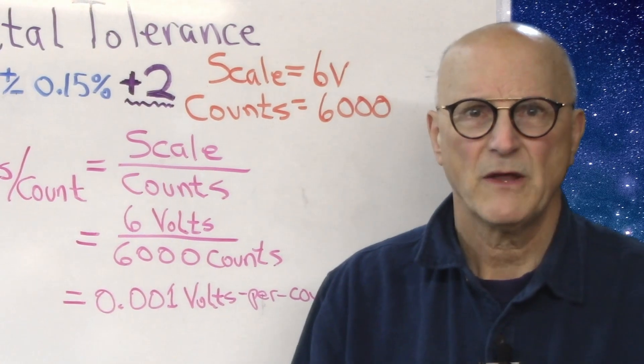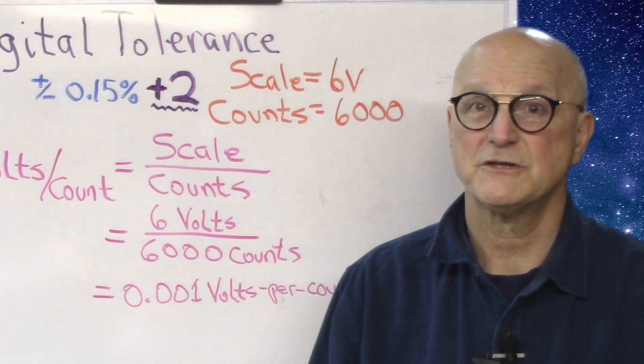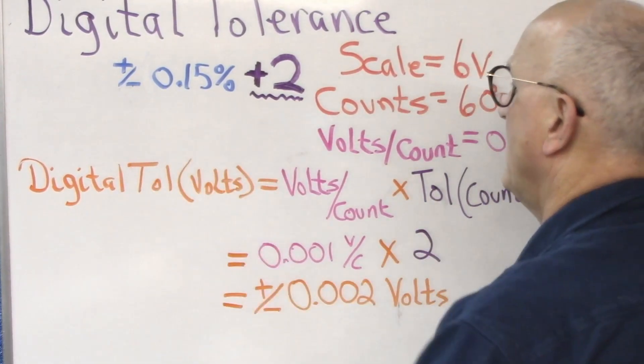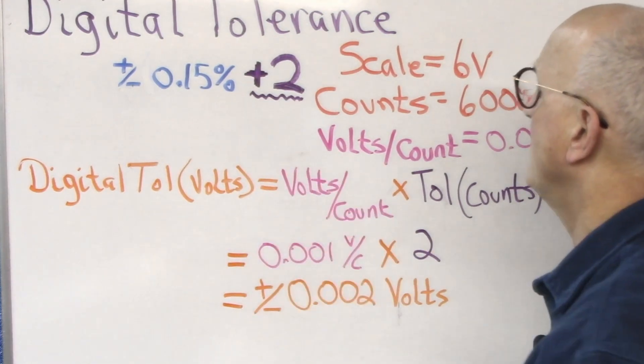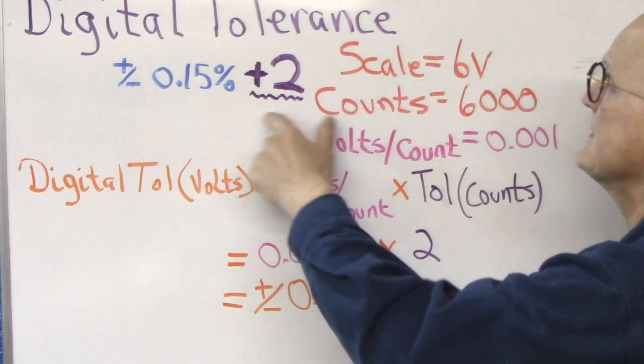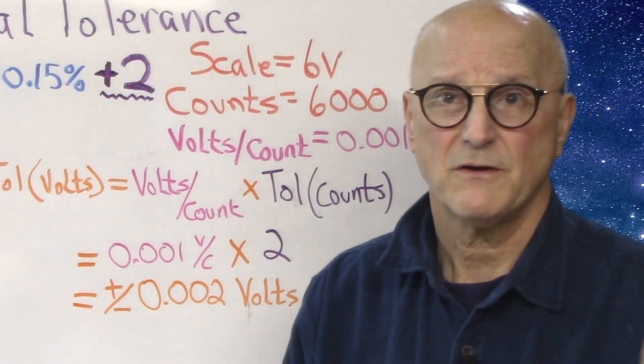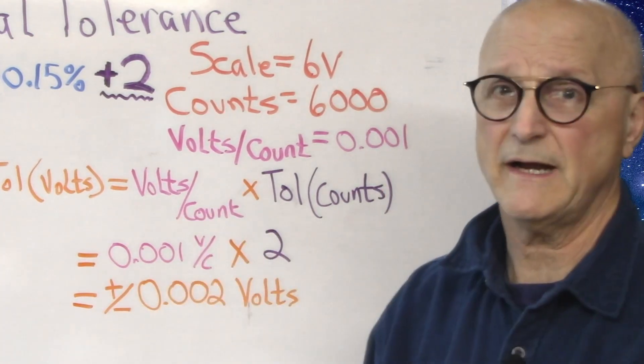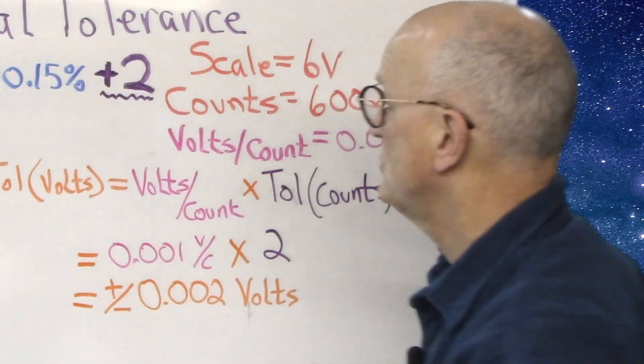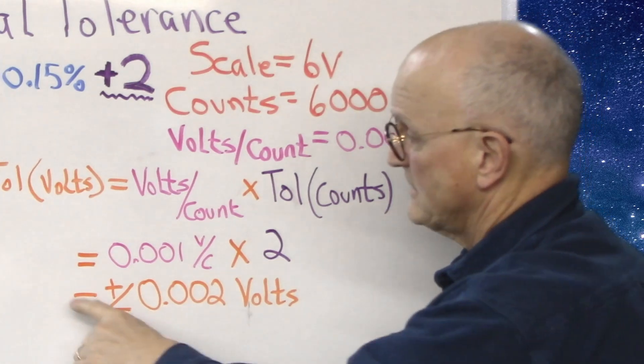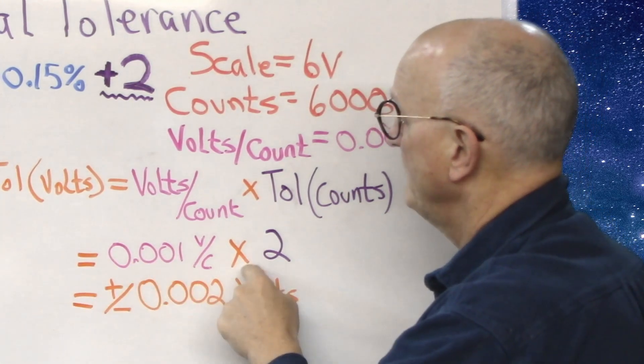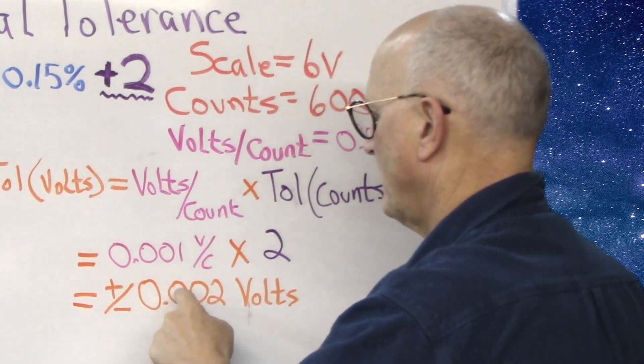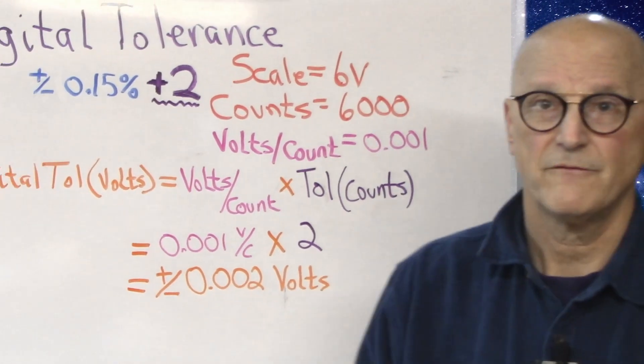Now that we know this, we need to calculate the amount of voltage the digital error might be. To get the possible error in volts due to the digital tolerance, we multiply the volts per count times the digital tolerance. So we just calculated that our volts per count is 0.001 volts per count. And we see from our tolerance that we have two counts. And so we multiply 0.001 by 2, and we get a possible error in volts of plus or minus 0.002 volts for any given measurement.